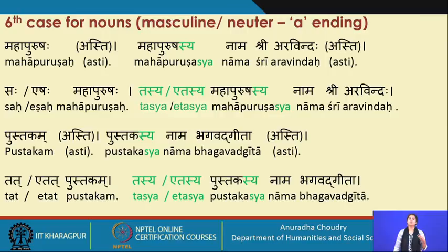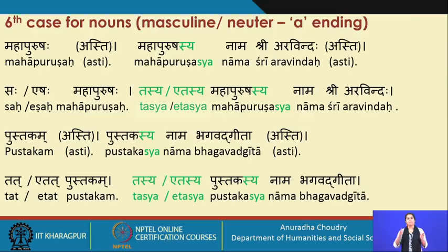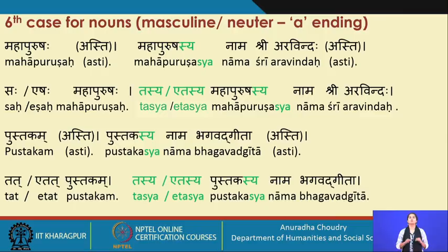Now let's look at how this ending gets added to nouns for masculine and neuter that end with the sound 'a.' For example, mahapurushah asti — in its root form the word is mahapurusha. In the subject case it is mahapurushah, and in the genitive or sixth case it becomes mahapurushasya — for example, mahapurushasya naam Shriaravindah asti.